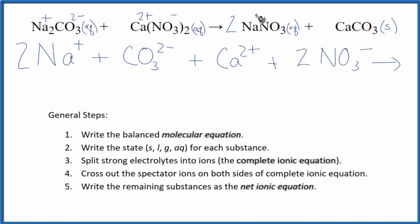For the products, we have two sodium ions. We have two nitrate ions. And then for the calcium carbonate, that's a solid. So when we do net ionic equations, we do not split solids apart. So we'll just write CaCO3. And those are the products.